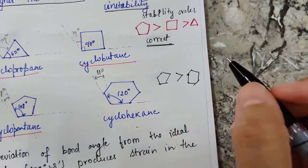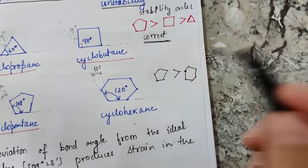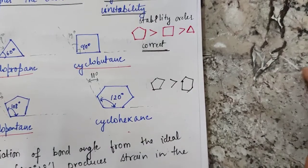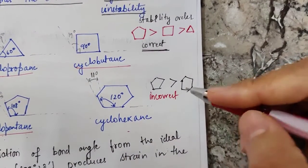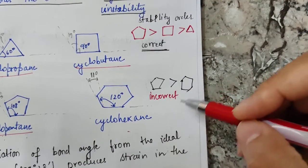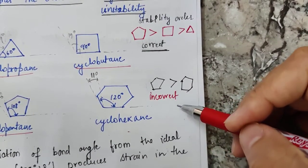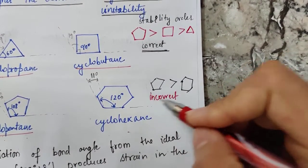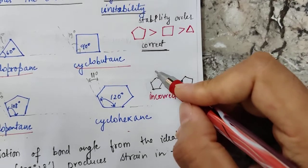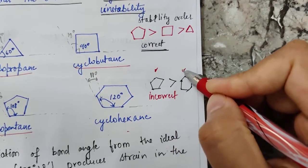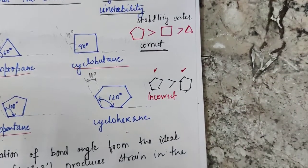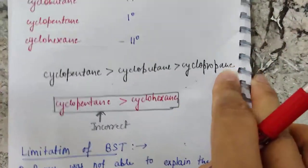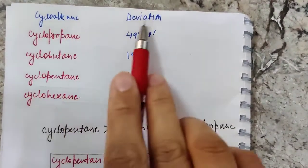However, when comparing cyclohexane and cyclopentane, Baeyer's theory suggests cyclopentane is more stable than cyclohexane, implying cyclohexane should be more reactive. But this statement is actually incorrect. You must have studied that the six-membered ring cyclohexane is more stable than the five-membered ring. Comparing the reactions of both compounds confirms that cyclopentane is more reactive than cyclohexane, making this a limitation of Baeyer's strain theory.